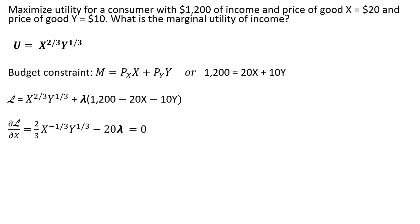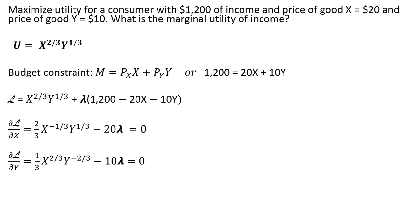We're going to take the partial derivative of the Lagrangian with respect to good X, and set that result equal to zero. Here is the result of that partial derivative. The next partial derivative is the partial derivative of the Lagrangian with respect to good Y, and again we set that partial derivative equal to zero. Our last partial derivative is the partial derivative of the Lagrange function with respect to lambda, and we just get back what is in parentheses.